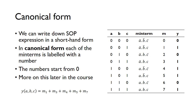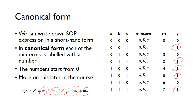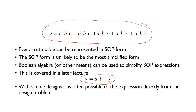Now we know the numbers for each min term, we just look at where we've got a one in the output column. We've got ones at min terms 1, 3, 4, 5, and 7. To write a sum of products expression in canonical form, you just use the numbers of the min terms. It's much more shorthand than writing out the complicated Boolean expressions we saw before.